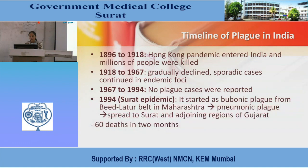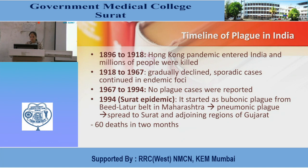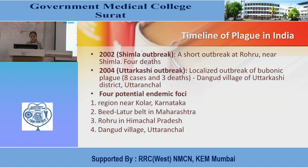The third pandemic associated with the orientalis biotype was from 1894 to 1918 in Hong Kong, China, and India. India timeline: from 1896 to 1918, the Hong Kong pandemic entered India and millions of people were killed. From 1918 to 1967, cases gradually declined to sporadic cases in endemic foci. From 1967 to 1994, no cases were reported. In 1994, the Surat epidemic started as bubonic plague from the Beed-Latur belt in Maharashtra, causing pneumonic plague spreading to Surat and adjoining regions of Gujarat, with 60 deaths in two months.